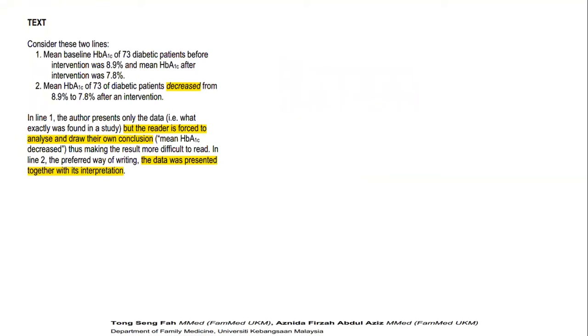Now, how do we go about writing an effective text? Let's consider these two sentences. One: mean baseline glycated hemoglobin of 73 diabetic patients from intervention was 8.9%, and mean glycated hemoglobin after intervention was 7.8%. Two: mean glycated hemoglobin of 73 diabetic patients decreased from 8.9% to 7.8% after an intervention.